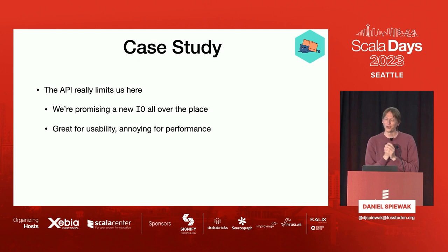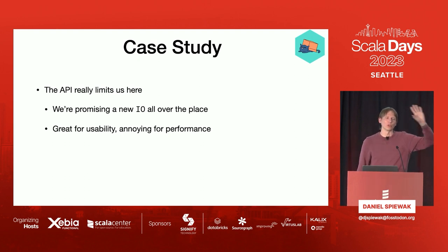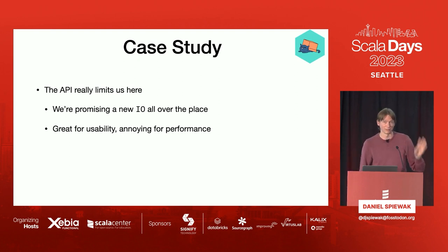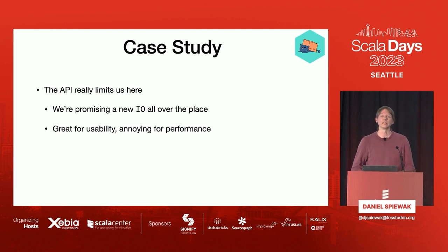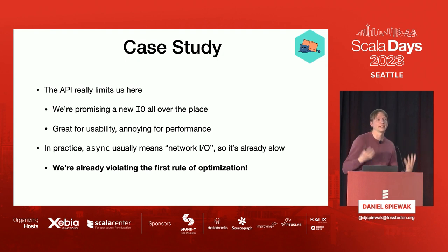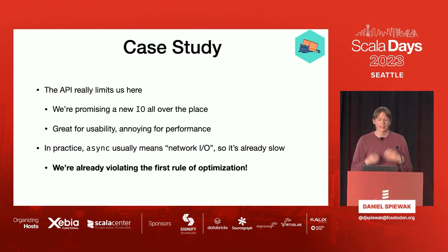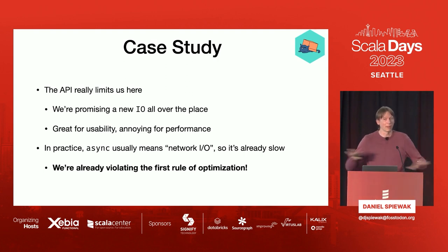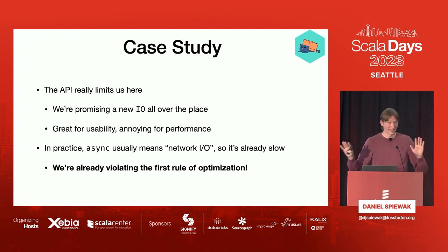One of the things to keep in mind with this example: when you're using the IO Monad, you're probably using it to do networking — some sort of HTTP thing — because that's most of what we do these days. And network IO is much, much, much slower than anything you could possibly do with flatMap. So we are really optimizing the wrong thing here, and that's a very important thing to keep in mind.